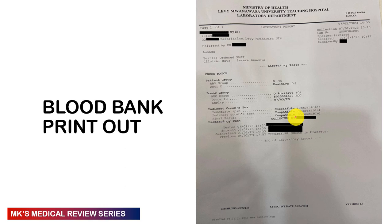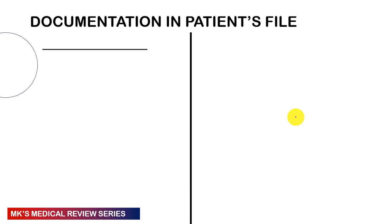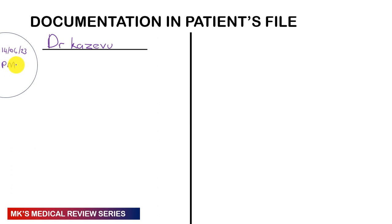Now, how do you document this in the patient's file? You need two people present. At the top, write your name — Dr. Kazivu — the date (14th of June 2023), the place (pediatric medical ward), and the time (1145). These are always preliminary requirements for everything you write in a patient file. Then head this section: Blood Compatibility Check.